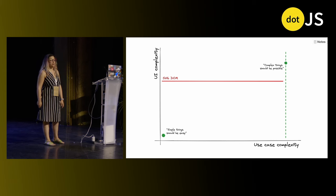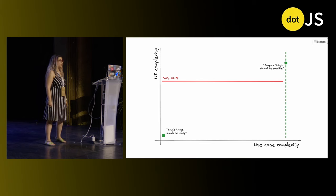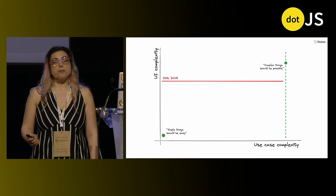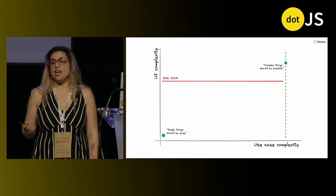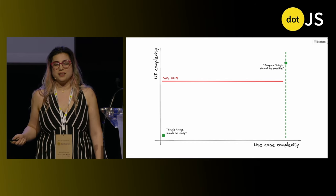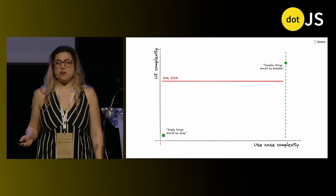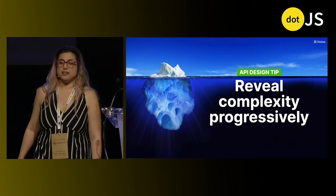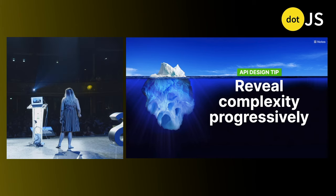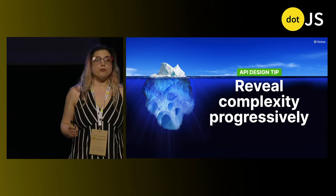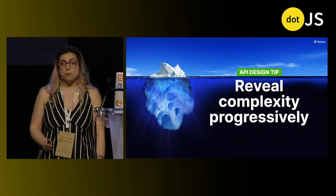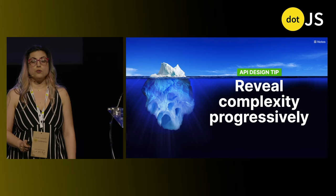So where does the SVG DOM lie on this plane? I think it would be a flat line, pretty high up. All the complexity of all the edge cases is in your face at all times — you can't avoid it, even if you don't need it. Which brings us to the first tip: complexity should be revealed progressively. It should be there when you need it, but tucked away when you don't.